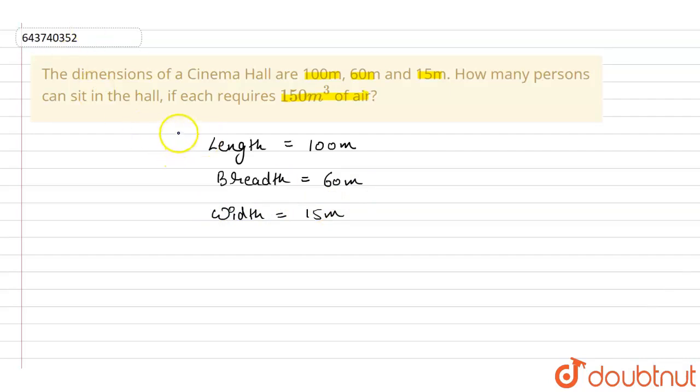According to the data given to us, we first find out the volume of the cinema hall. A cinema hall is a rectangle.